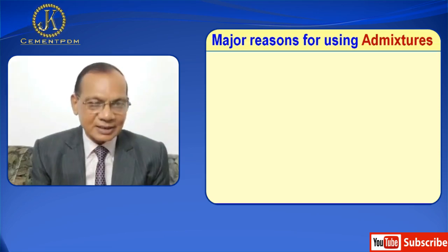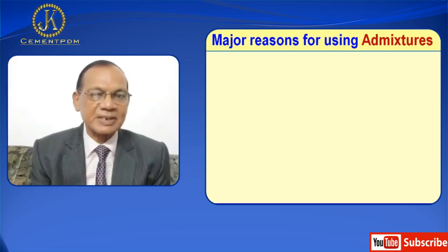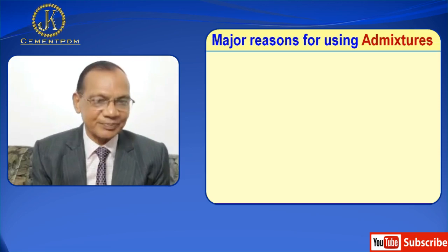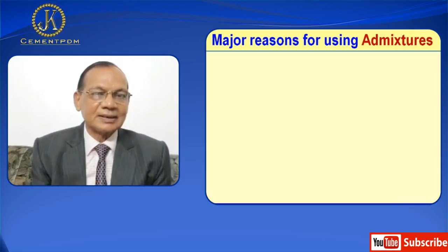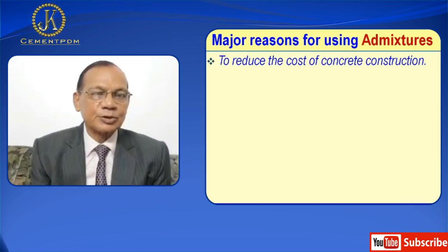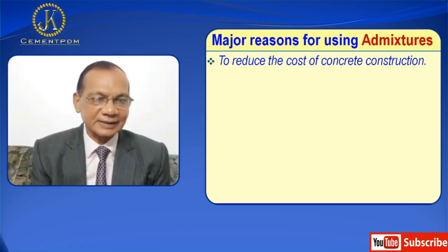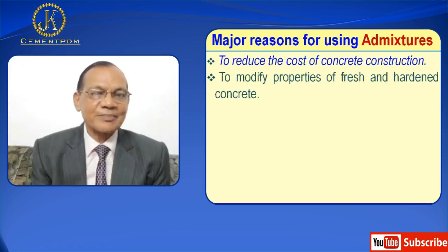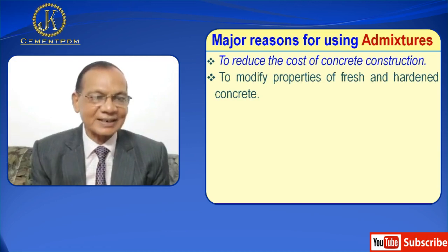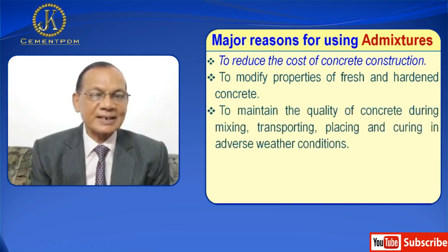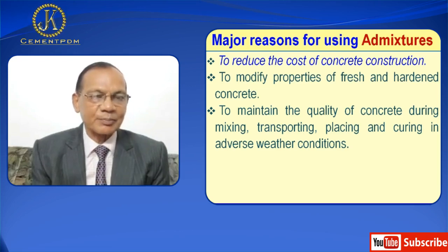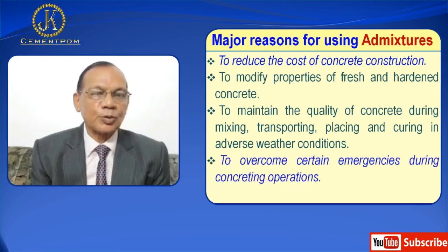Now let us discuss the major reasons for using admixtures. They are used to reduce the cost of concrete construction, to modify properties of fresh and hardened concrete, and to maintain the quality of concrete during mixing, transporting, placing, and curing in adverse weather conditions.